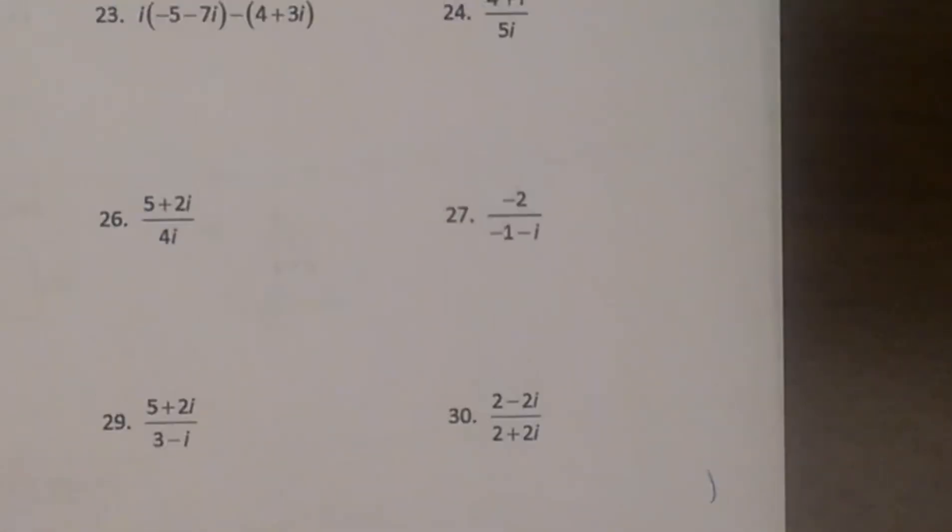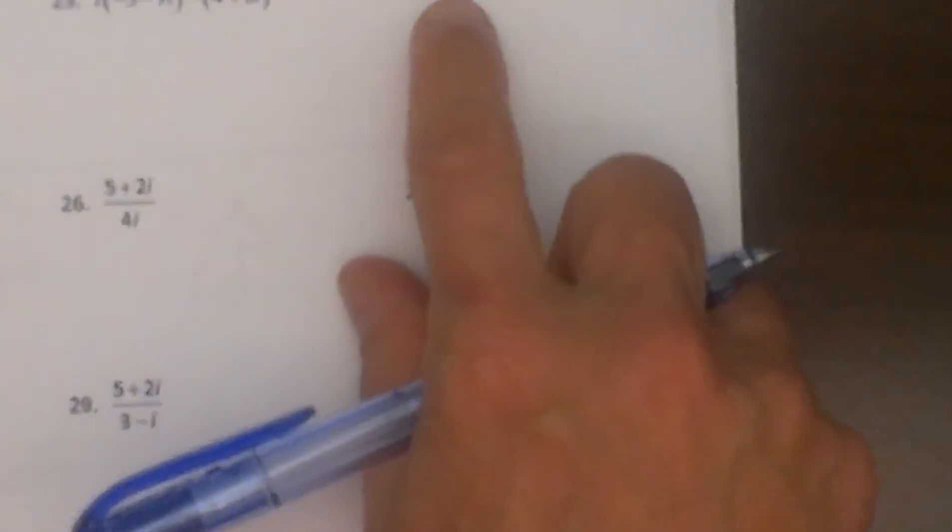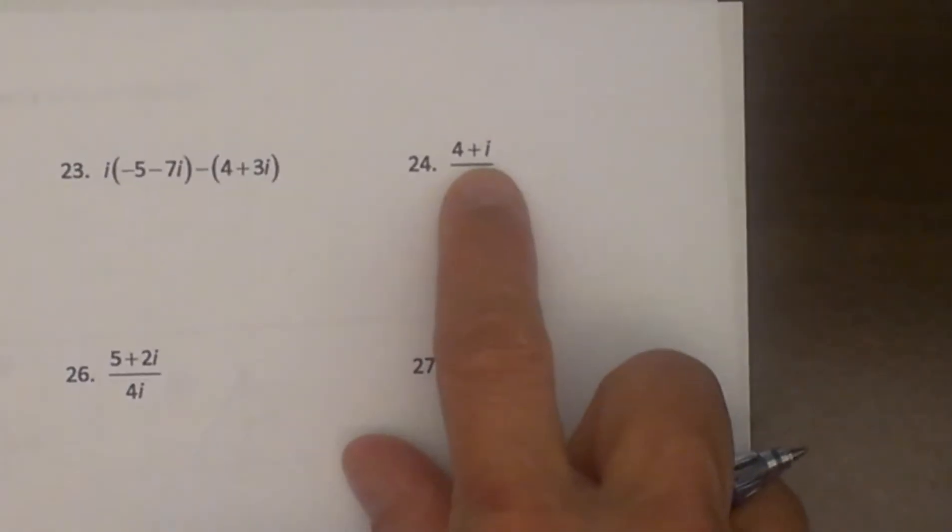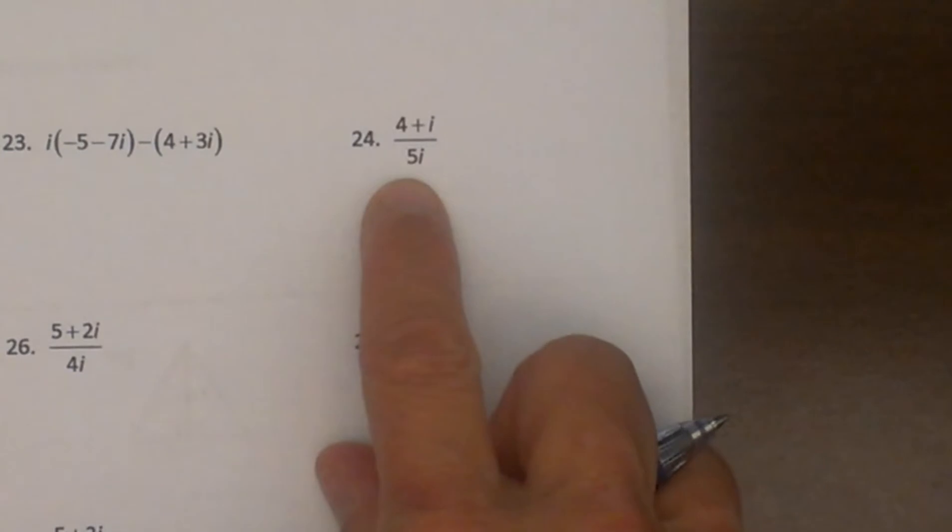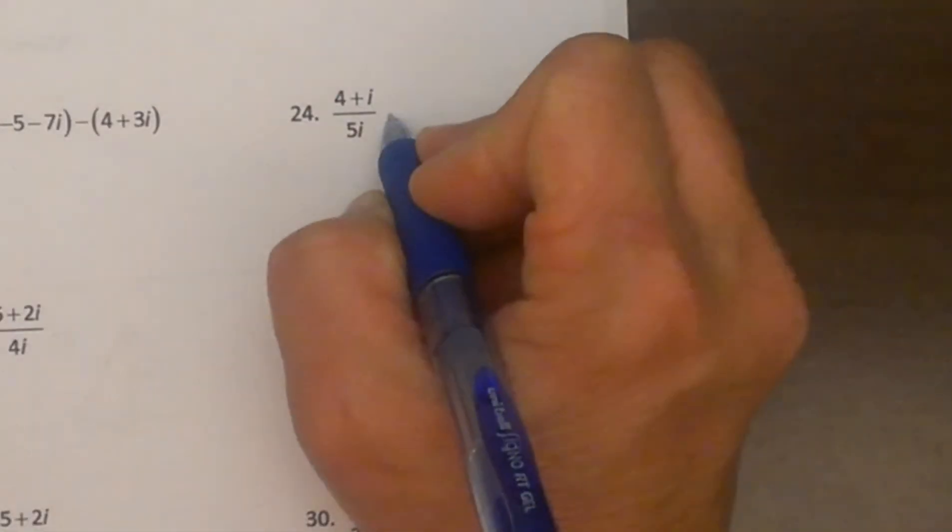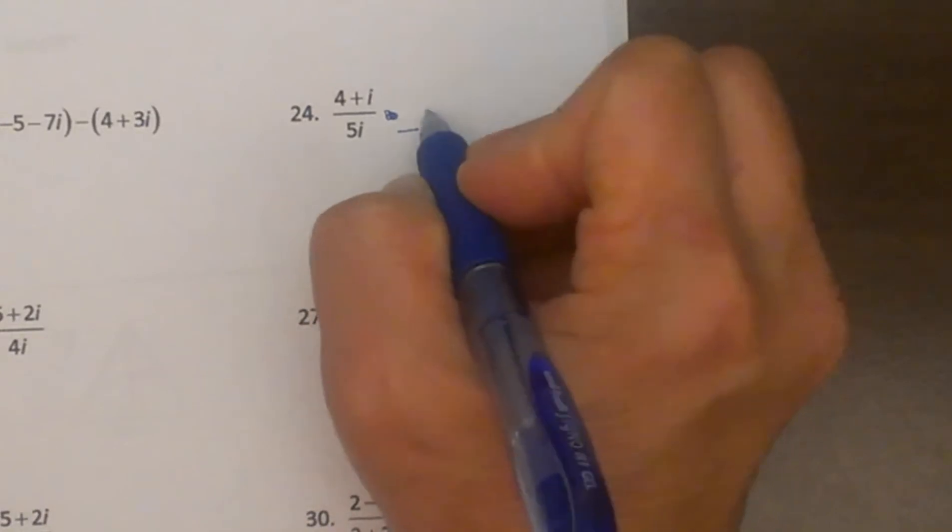Let's try one with division. Division is a little trickier. If you have 4 plus i over 5i, we cannot leave the i in the denominator because remember, i is really just the square root of negative 1, just a radical. So we are going to have to multiply it by negative i.